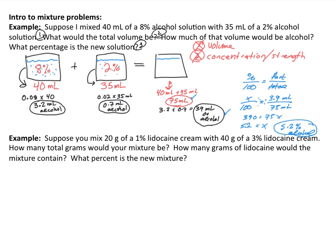The second example is very similar — feel free to pause and try it. I'm mixing together 20 grams of a 1% lidocaine cream and 40 grams of a 3% cream. I want to know: what's the total weight in grams of the mixture? How many grams of lidocaine does the mixture contain? And what percent is this new mixture? I'll draw the picture — I'm taking two quantities, adding them together, and producing a third. The first is a 1% lidocaine cream with 20 grams; the second is 40 grams of a 3% cream.